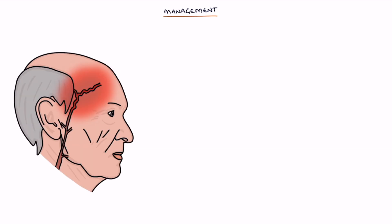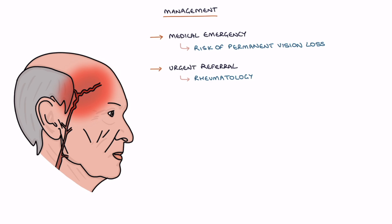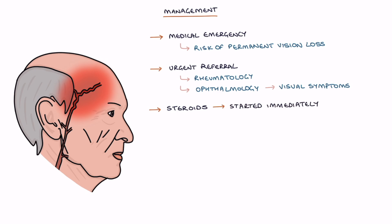Giant cell arteritis is a medical emergency with a high risk of permanent vision loss. Patients need urgent referral to rheumatology and same-day assessment by ophthalmology if they have visual symptoms. Steroids are the main treatment and are started immediately before confirming the diagnosis to reduce the risk of vision loss. There is usually a rapid and significant response to steroid treatment.